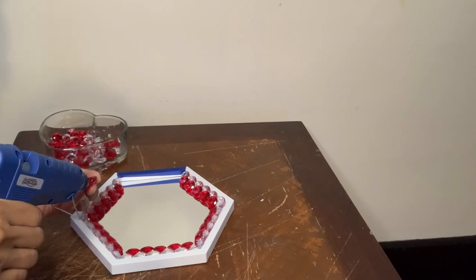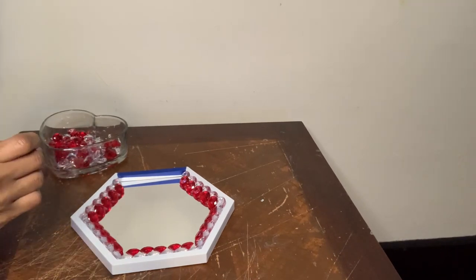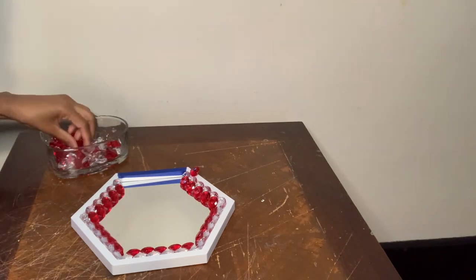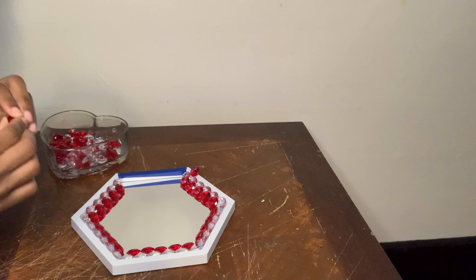Next I'm gluing the red gems around the perimeter of my frame, and instead of me gluing them close together like I did for the other gems, I'm going to space these ones out.